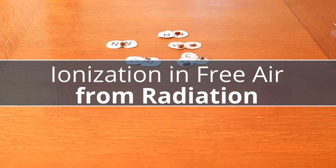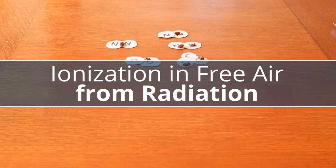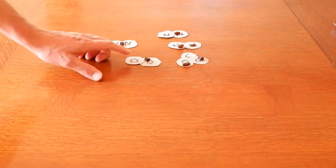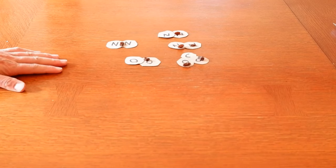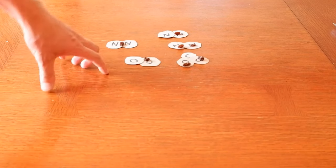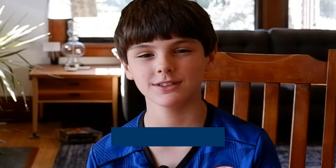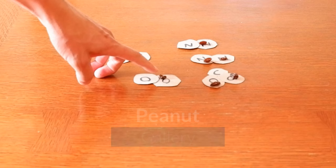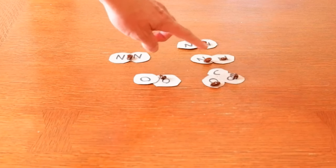This is our air. You can see we have in our air nitrogen, we have oxygen, we have carbon dioxide, and then we also have electrons. Raisins as electrons, very professional.